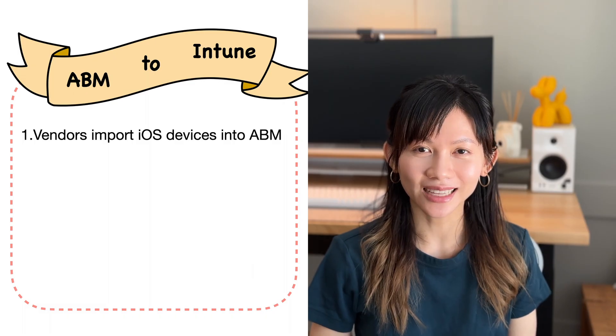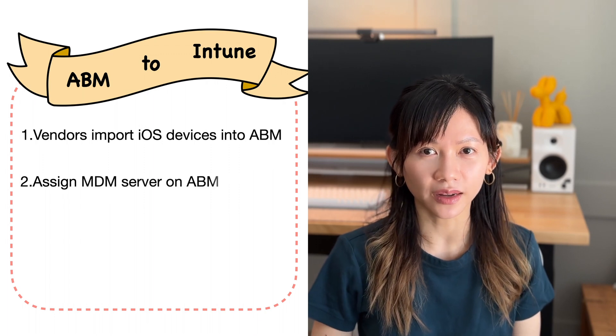Step 2: assign an MDM server to your iOS devices on ABM. For old devices you do this manually, or you can set up automation for new devices to be automatically assigned an MDM server. MDM stands for mobile device management. Although you can set up multiple MDM servers, it's not advised because it's complicated — stick with one MDM server if you can. In security, just like in life, you don't want things to be complicated if they don't have to be. This step tells the device who is managing it — in our case, Microsoft Intune.